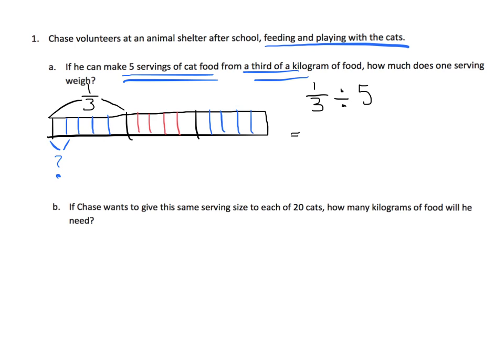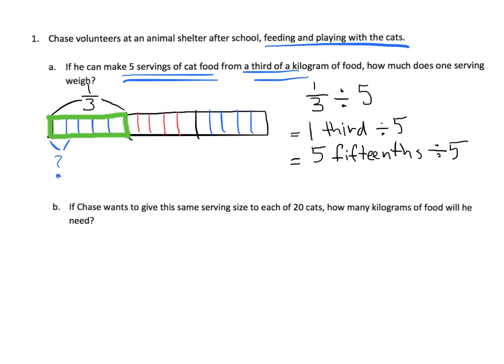Let's do the number 1 third divided by 5. We can see that 1 third can be thought of as 5 fifteenths. So there's our 5 fifteenths. We can change this to 5 fifteenths divided by 5, and 5 fifteenths divided by 5 is 1 fifteenth. And that's not too surprising.